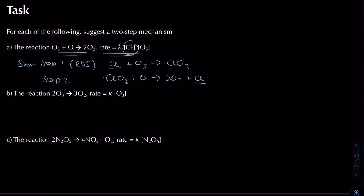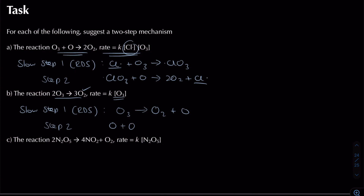The next ozone decomposition is simpler — the rate equation shows just ozone. In step one (the rate determining step), one ozone molecule breaks down into O₂ and an oxygen atom intermediate. That oxygen atom reacts with another lot of ozone in step two, forming two lots of O₂. All ozones are used up, all products formed, and the intermediate oxygen atom cancels correctly.